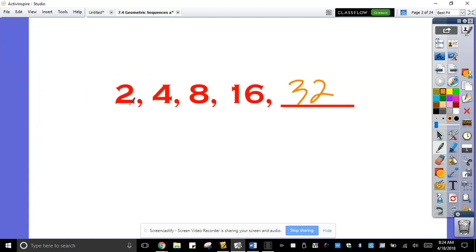If you notice, 2, 4, 8, 16. Are we adding or multiplying, dividing? Yes, you're right. We're multiplying here by 2 each time. And that's how we got the 32 because you multiply 16 by 2.